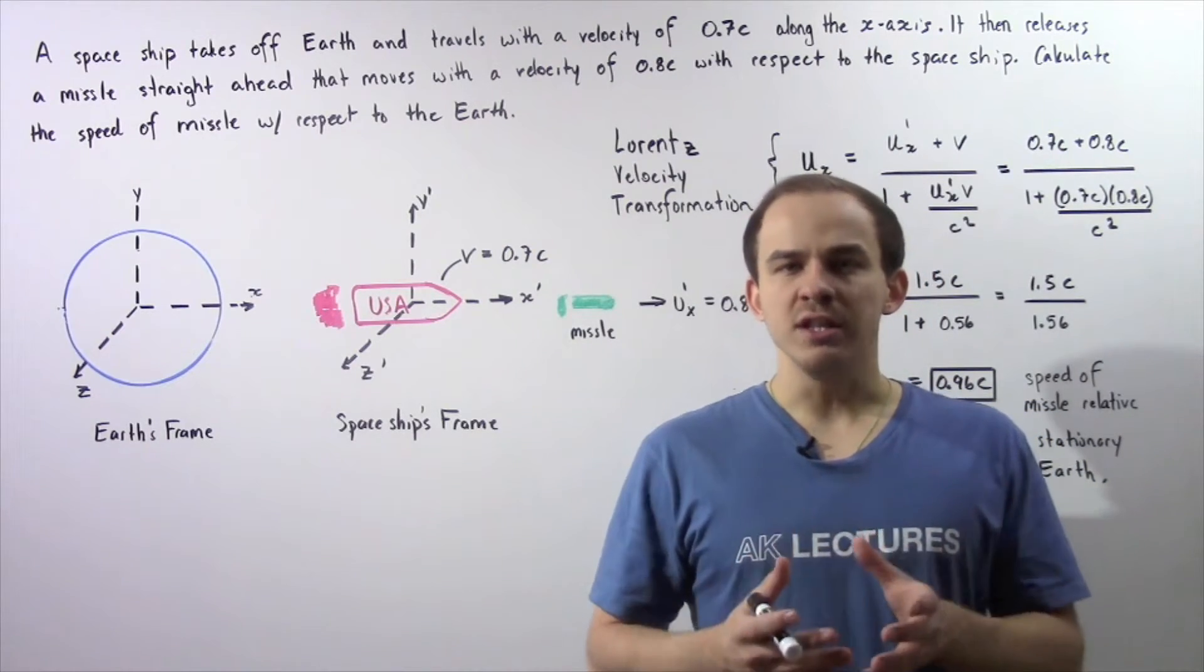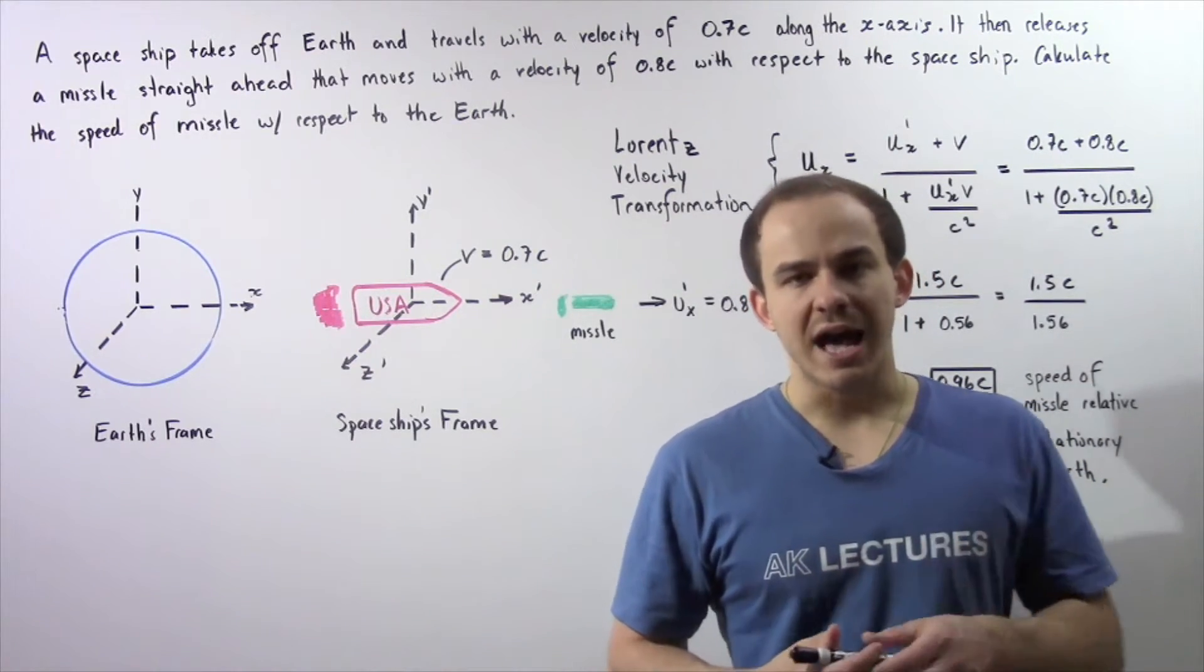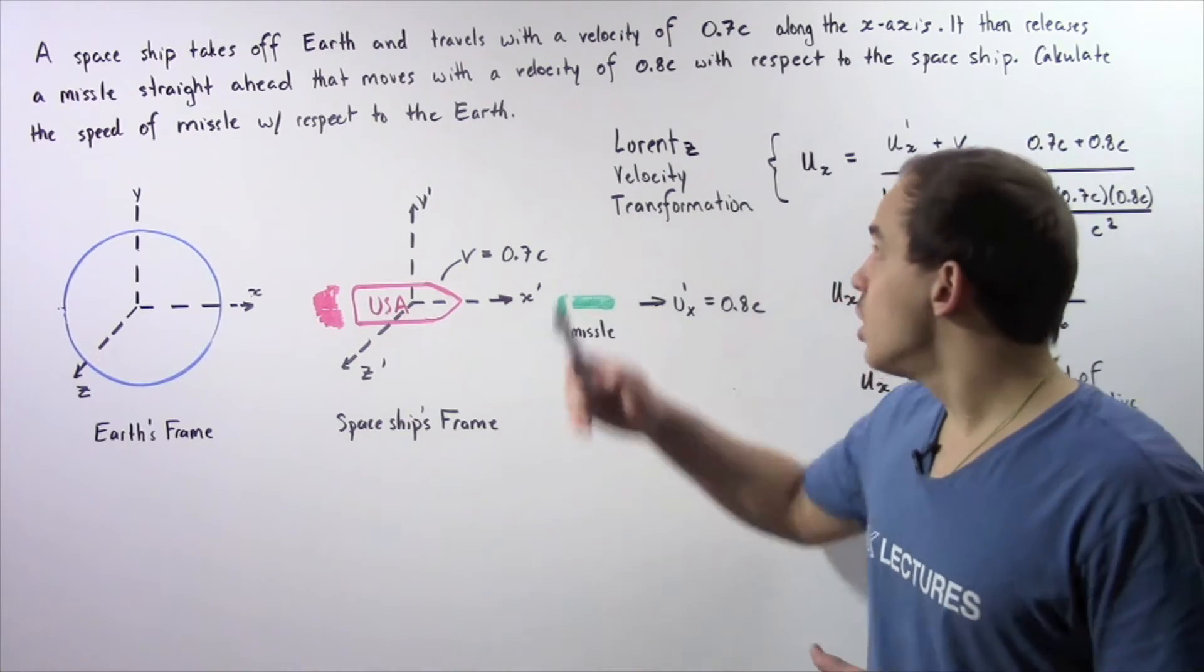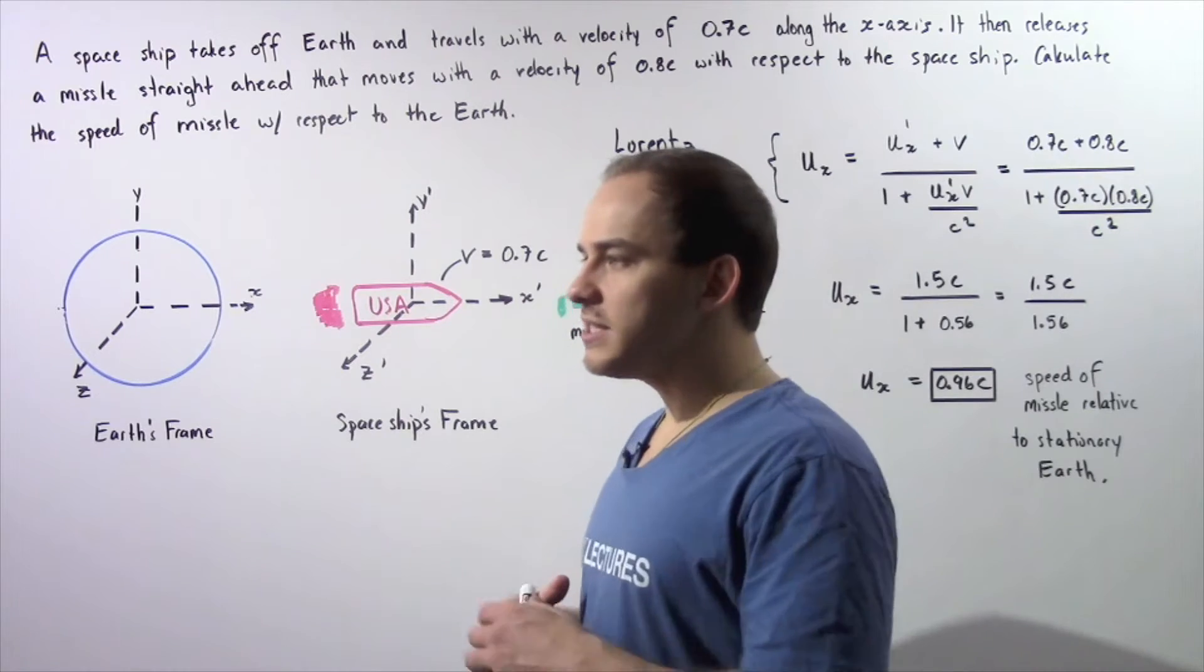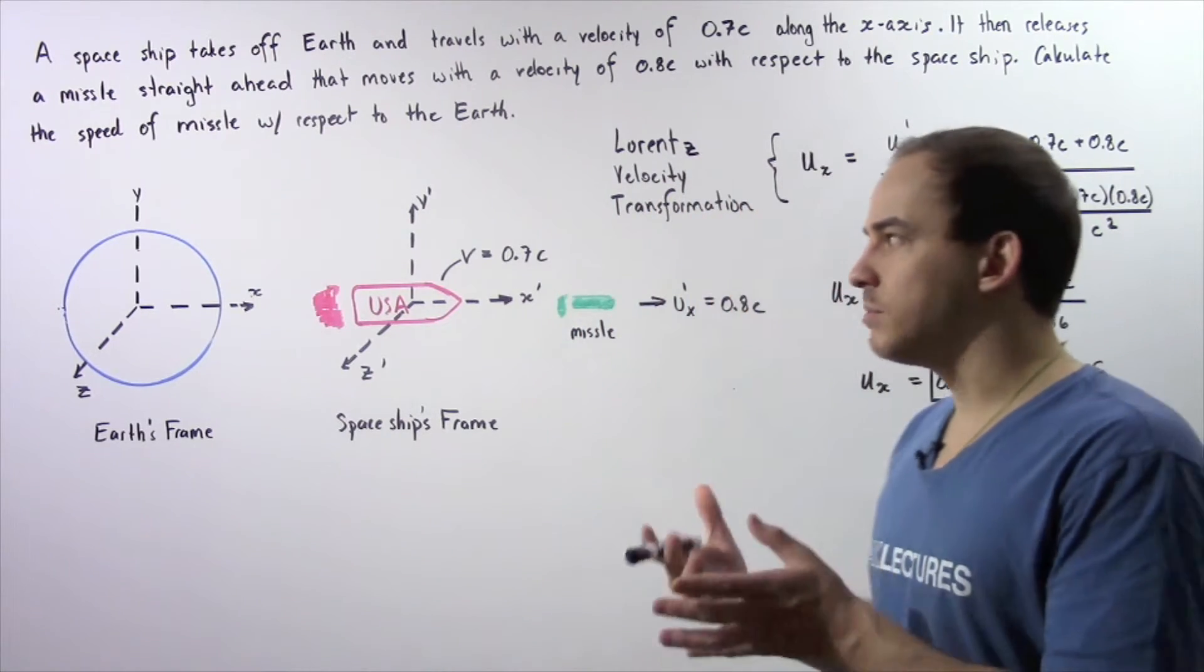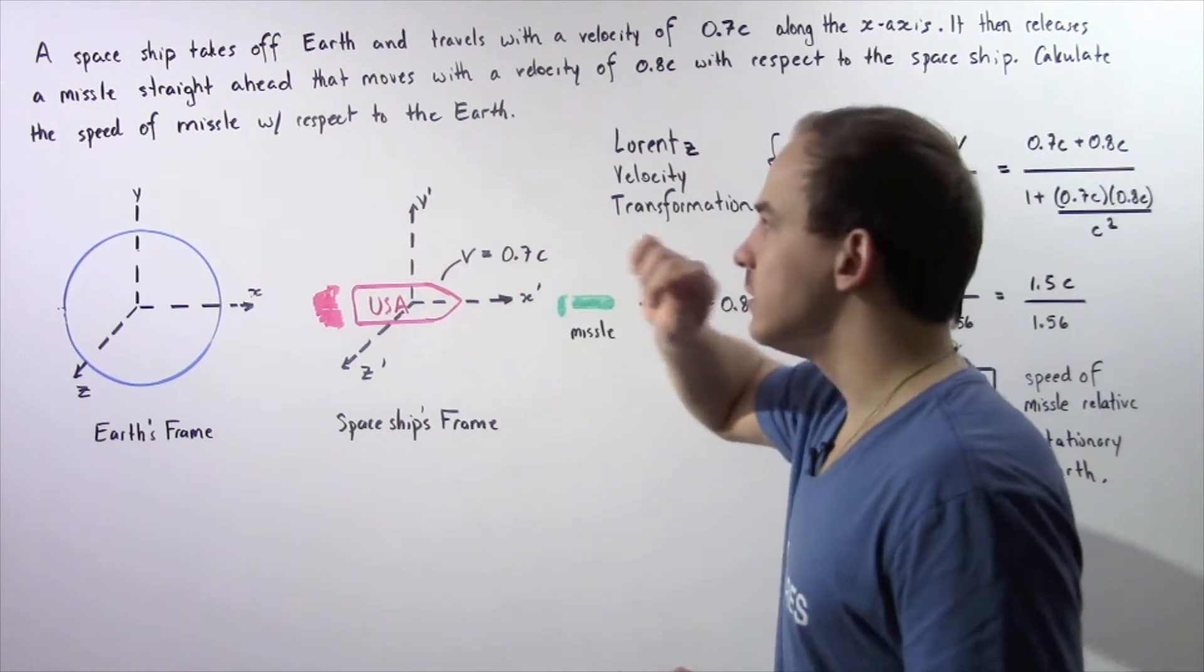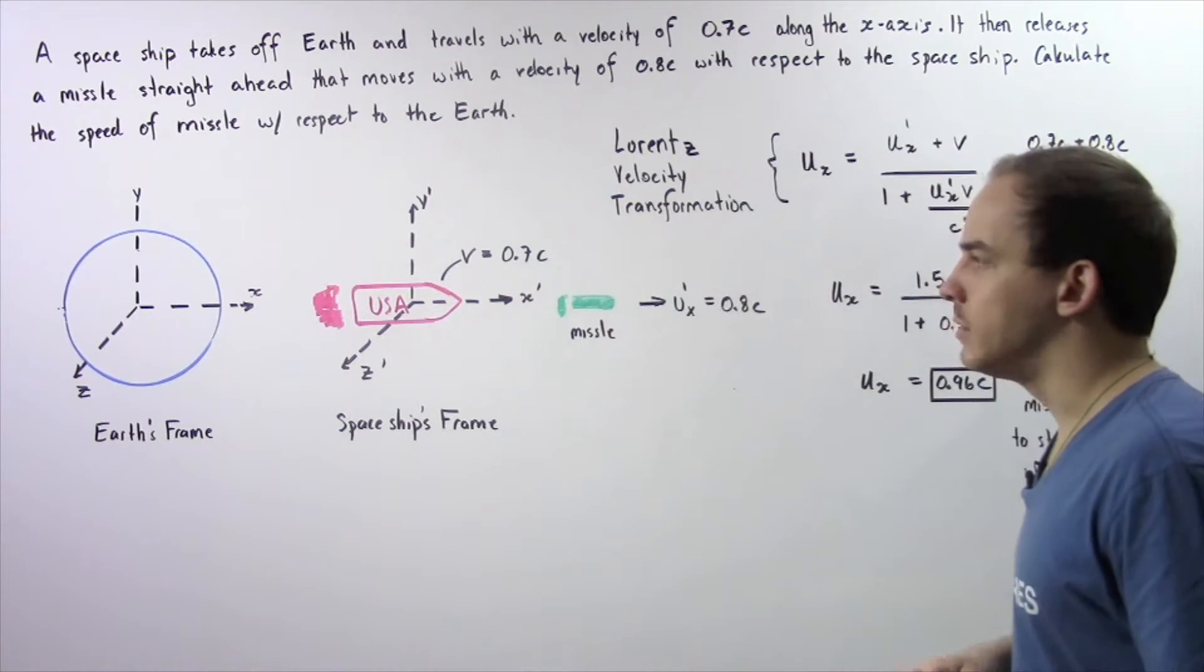Previously, we examined relativistic addition of velocities, also known as Lorentz velocity transformations. Now let's actually examine how we can apply those concepts by looking at the following example.